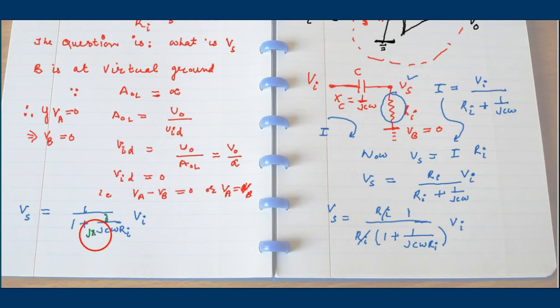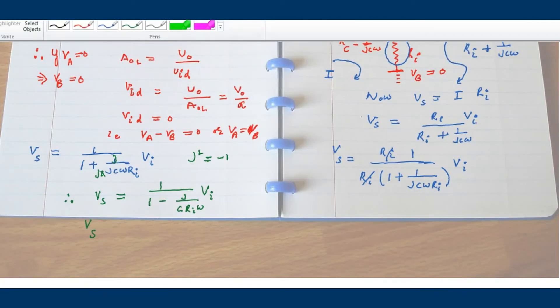Vs equals RI upon, RI taken as common from the denominator. Then RI cancels out. Vs becomes 1 over 1 plus 1 over jC omega RI into VI. Now multiply and divide by j operator. So j square, j square equals minus 1. So Vs signal becomes j into j is minus 1, so minus j upon C RI omega into VI.